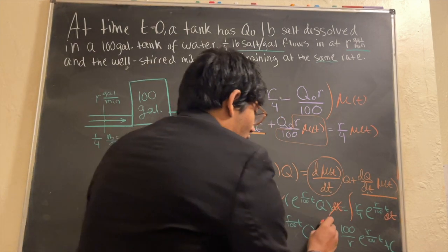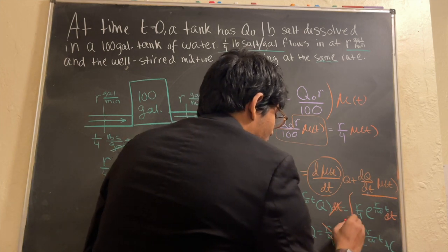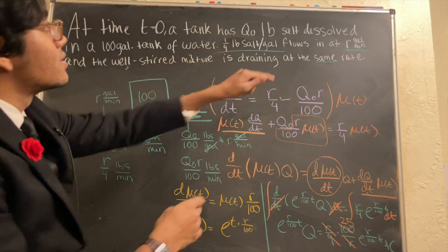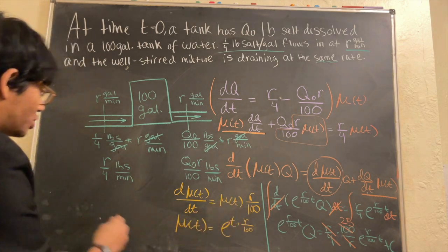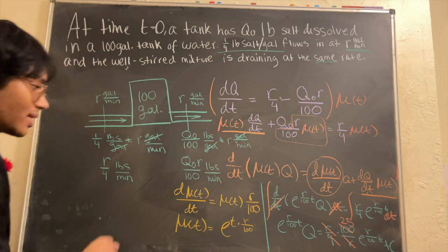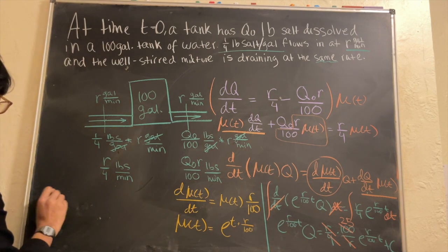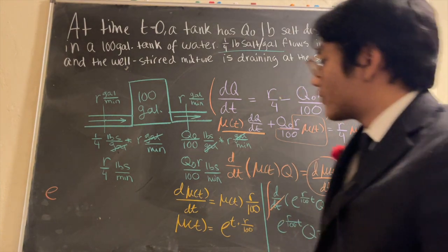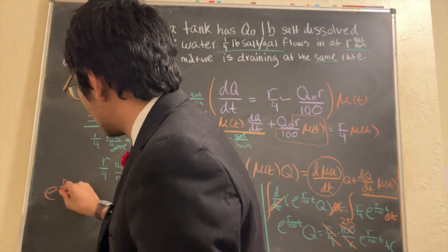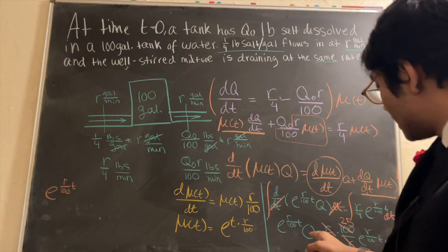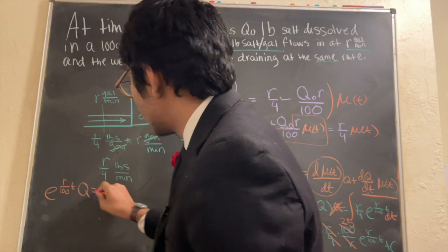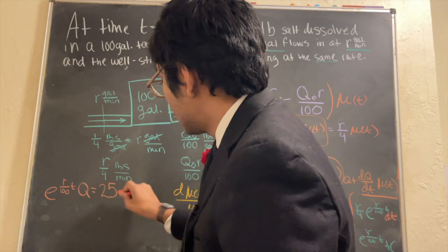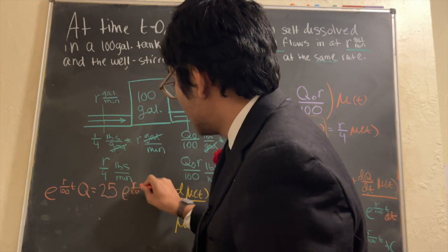And so r and r cancel out. 4 goes into 100 25 times. So what are we left with? I'm going to come, let me see if there's any other colors I can use. Unfortunately no. Let's shift over to this side. So I'm going to be left over with e to the r over 100 t times q, which is what we want to solve for, is equal to 25 times e to the r over 100 t plus c.